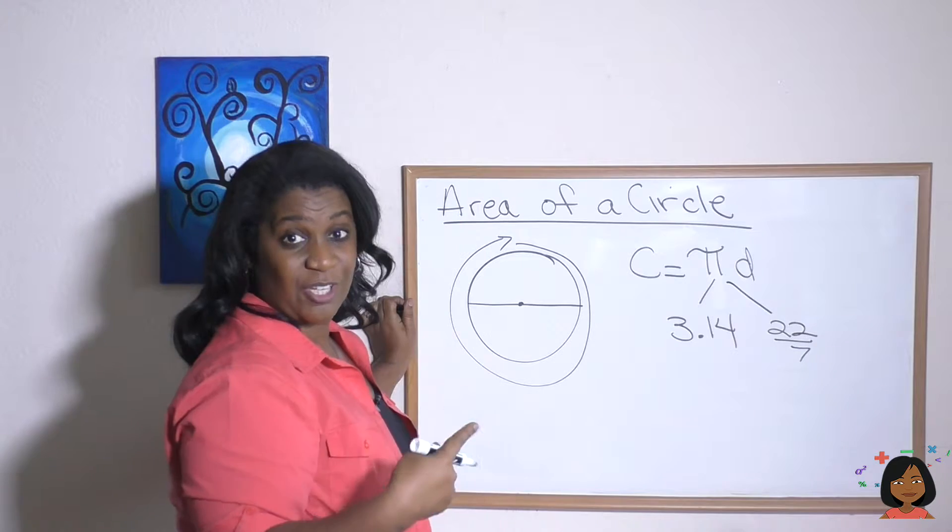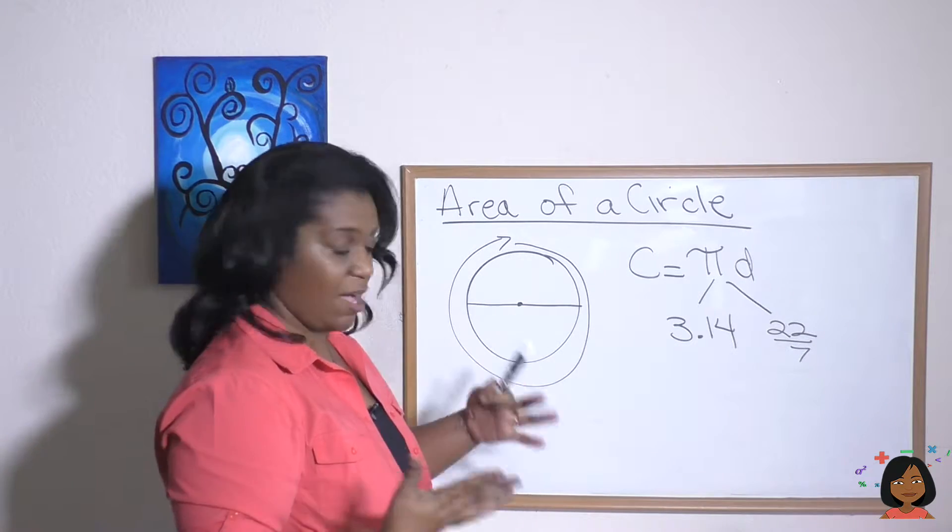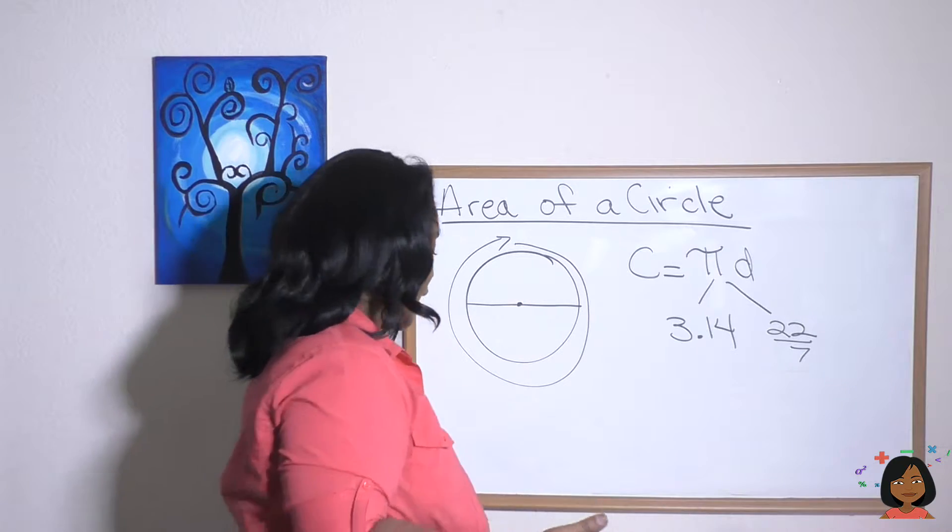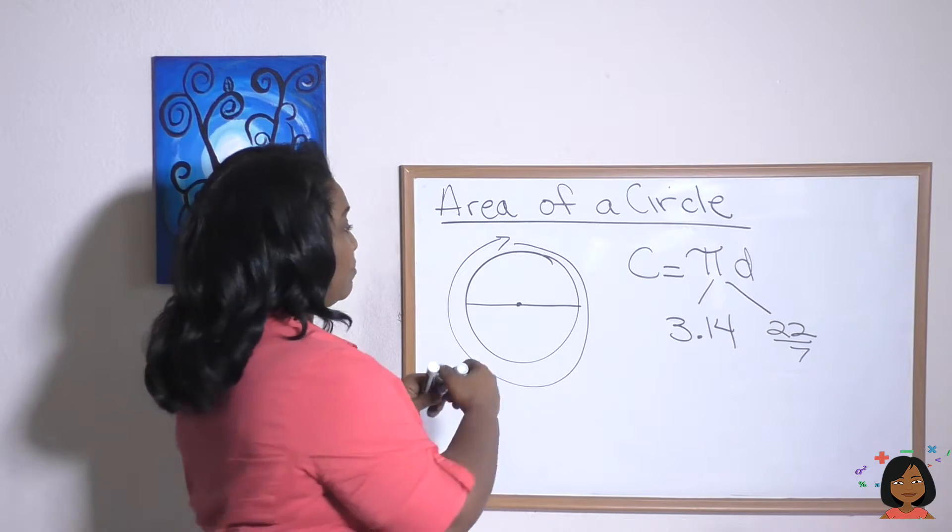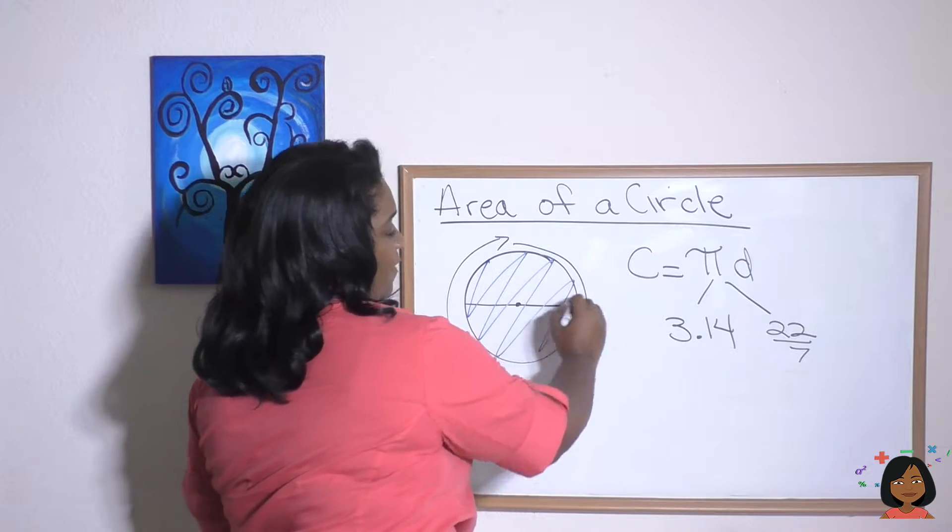Now, the good news is we can use the same pi to figure out the area of a circle. The area is really the full inside of the circle.